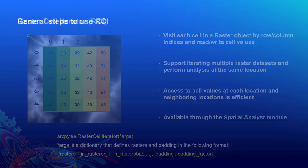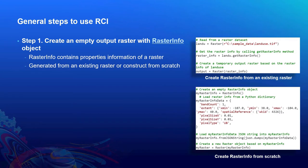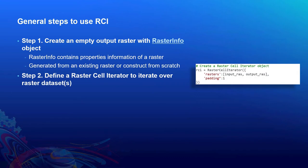Here are the general steps to use RCI. Step 1: create an empty output raster with a RasterInfo object. This RasterInfo object contains property information of a raster and can be created in two different ways — generated from an existing raster, or constructed from scratch. The code snippets on the right show both approaches. Step 2: define a raster cell iterator to iterate over a raster dataset. This step is straightforward.